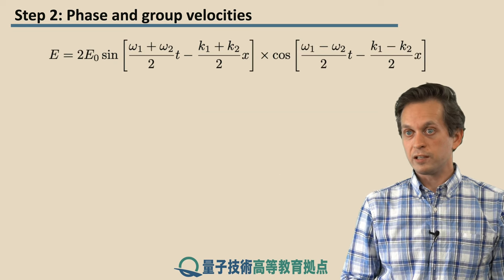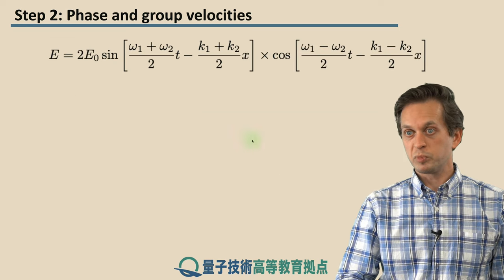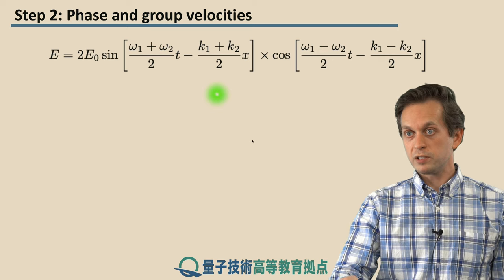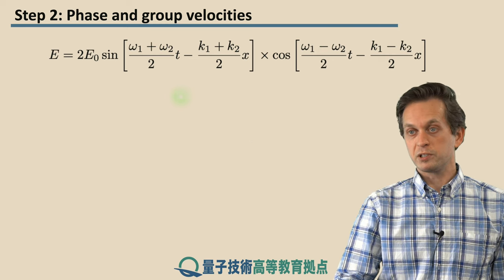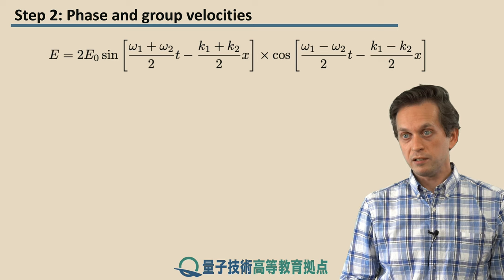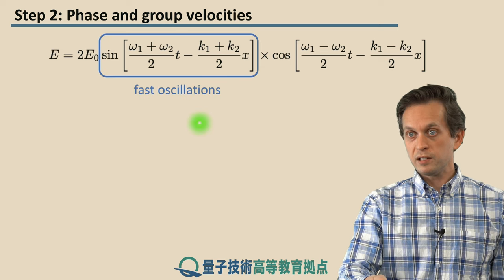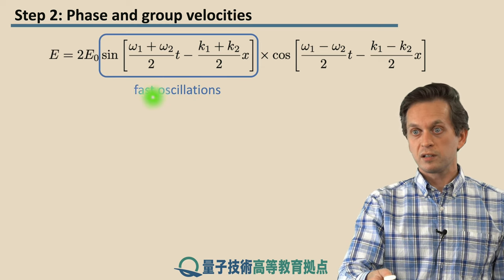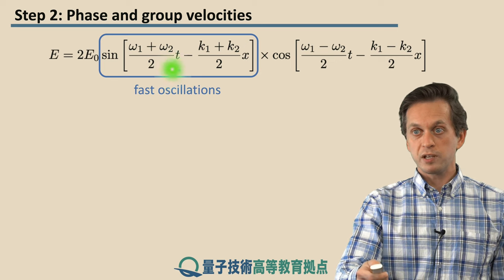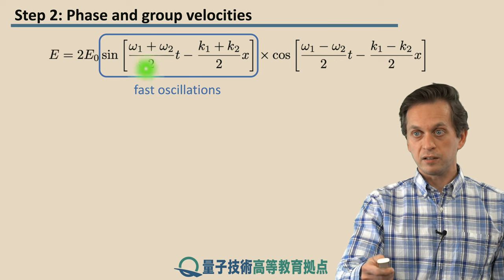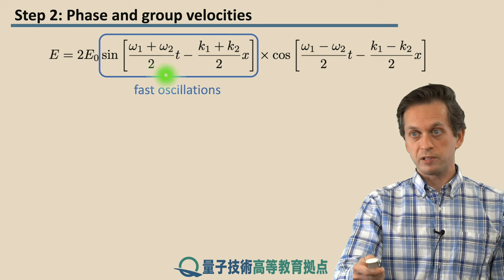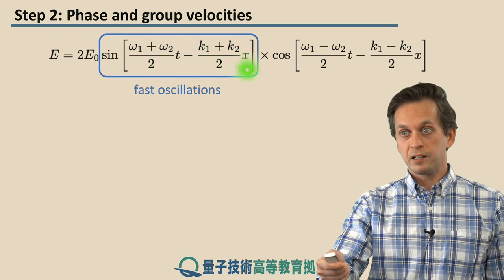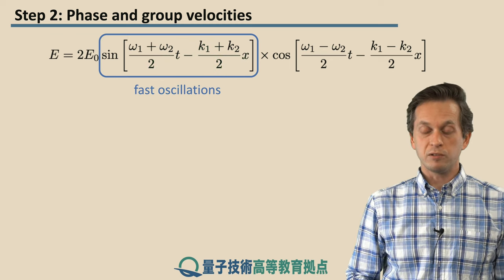So let's have a look at the shape of this superposition. We say that we've got these two terms that determine our superposition. If we only look at the sine, we see that it's oscillating at a much faster frequency, because here we are adding the angular velocities ω1 and ω2, and we are adding the wave numbers k1 and k2.